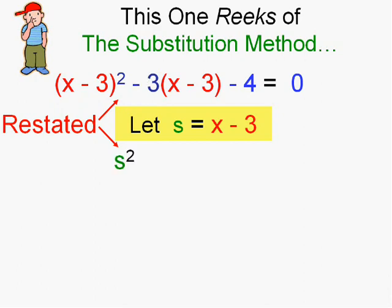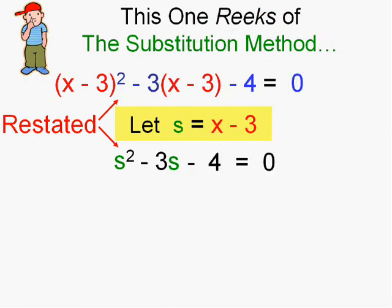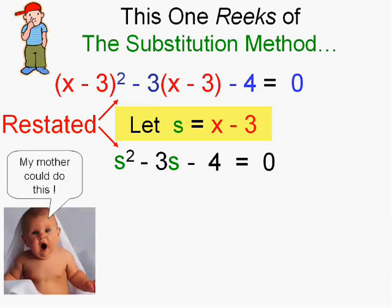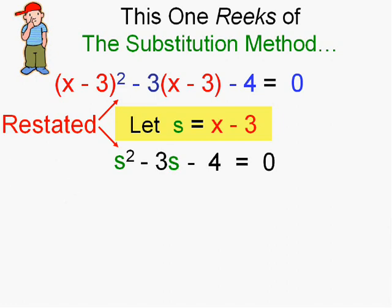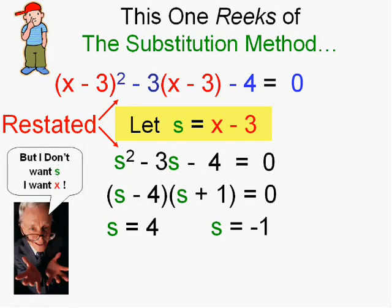This will be s squared. How sweet is that? The middle term will be minus 3s, won't it? And the rest of it as usual will just come down. Now we'll solve this what is now a quadratic equation. Much easier isn't it? My mother could do this. Let's factor it and the answers, two answers, are 4 and minus 1.